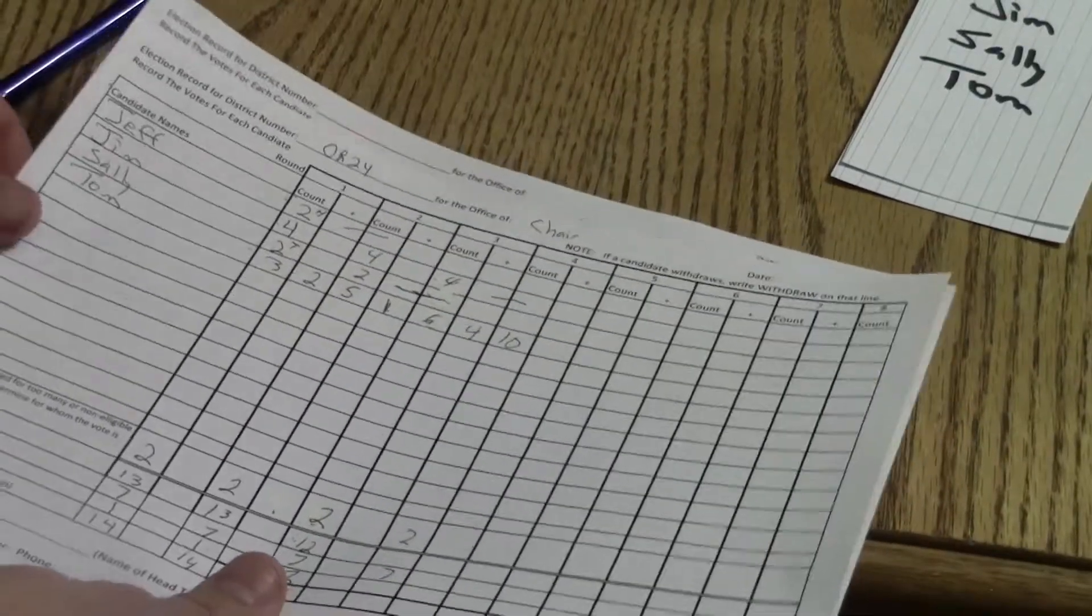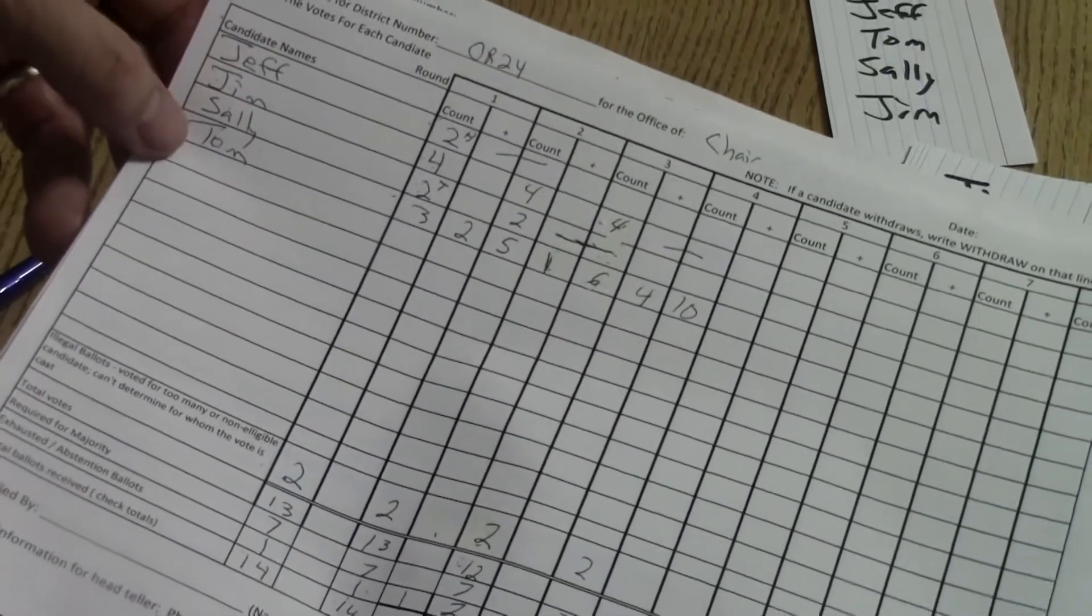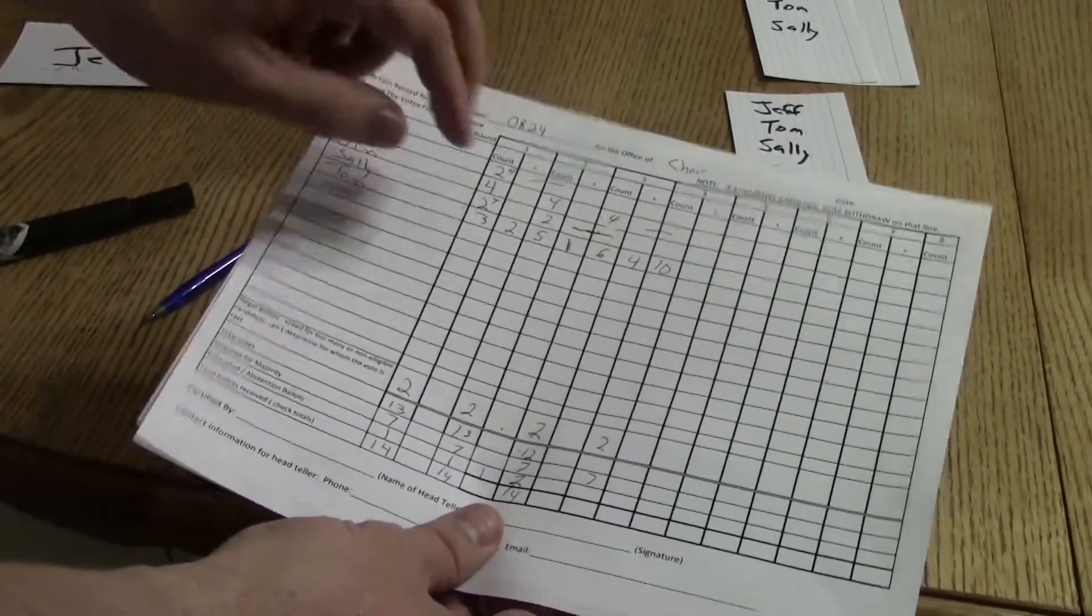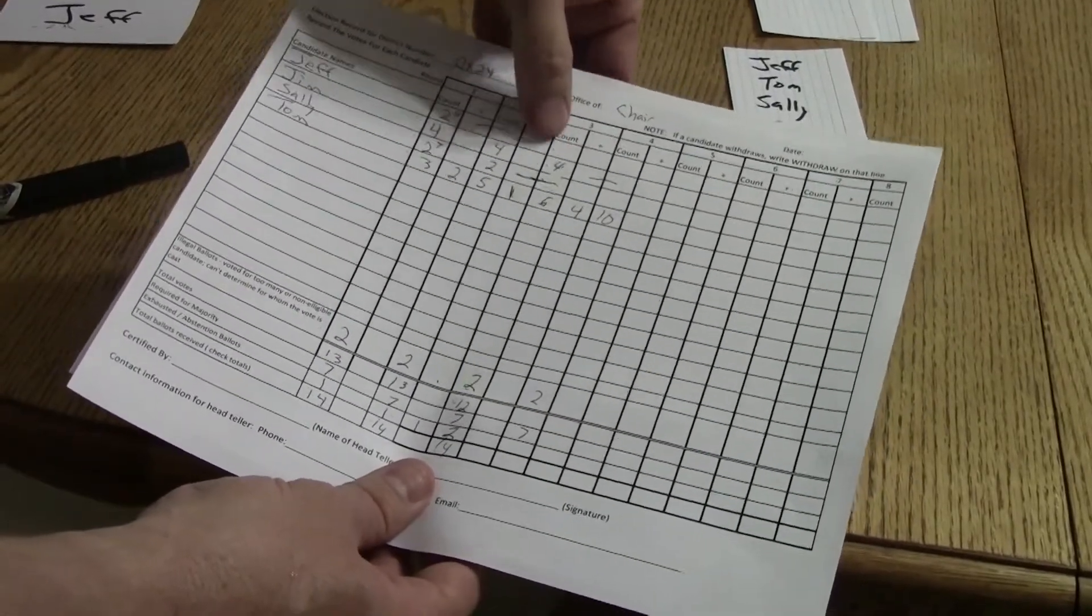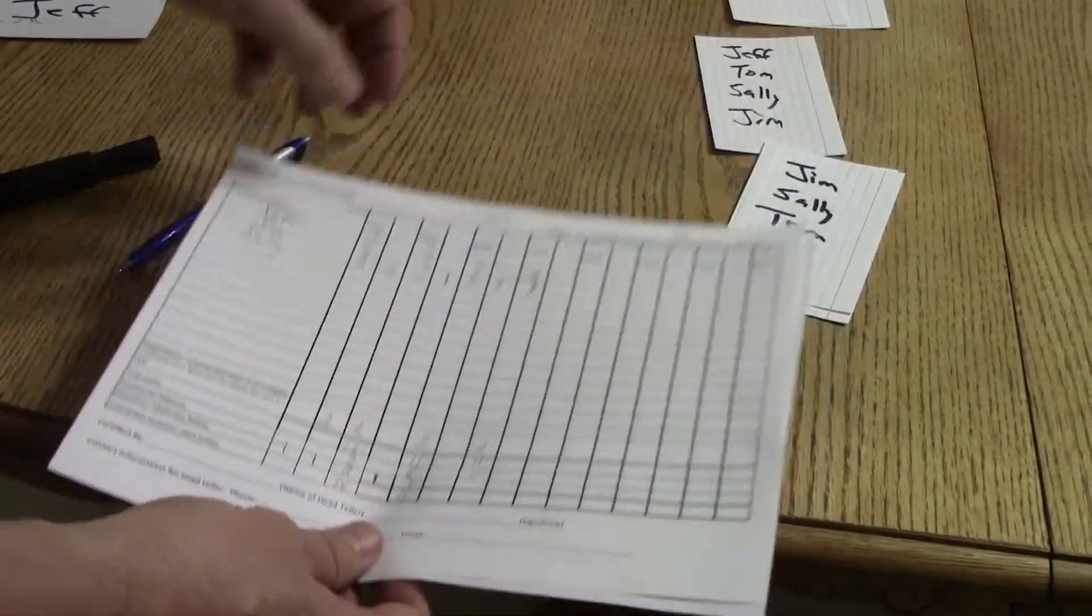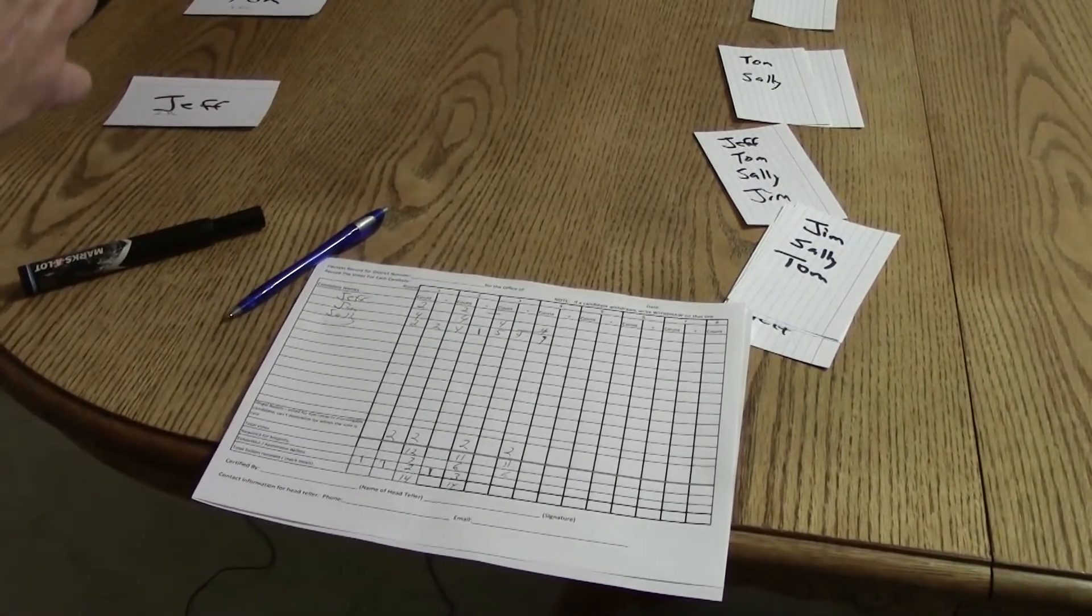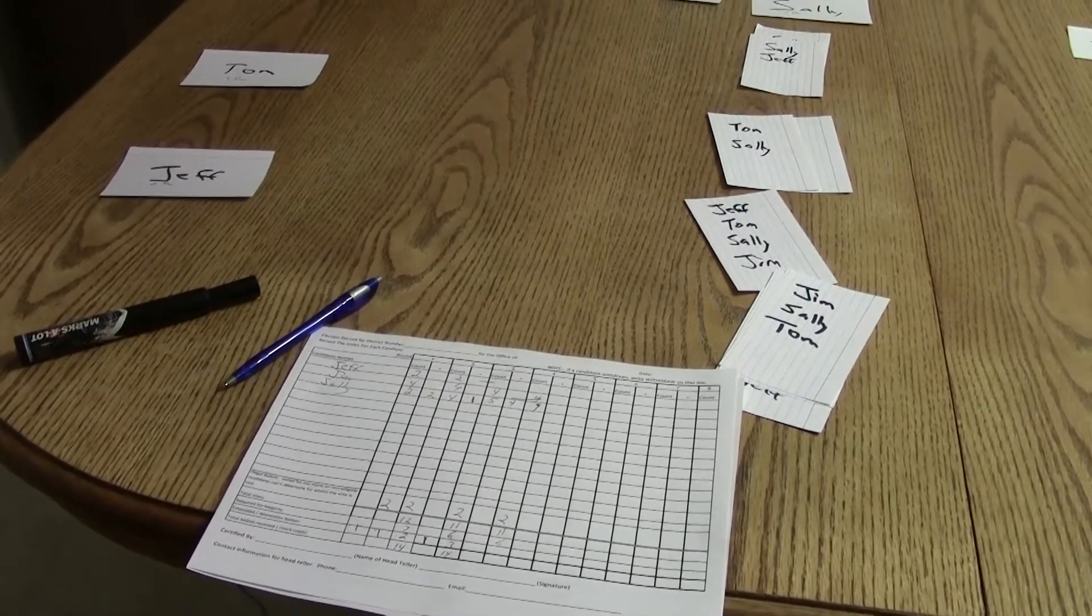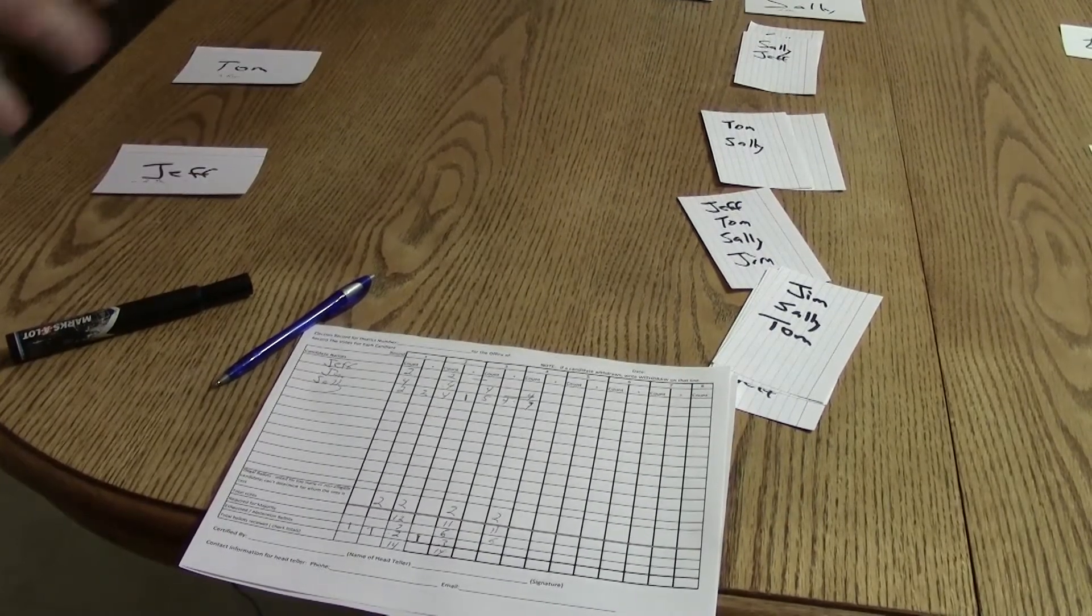Now if we look at our other vote before, remember we only had Jim and Tom as the last two. So this is why we just don't take the top two vote-getters and say that they're elected, because Tom would have been elected, but Jim would have been elected when he wasn't the most popular choice. And the reason that Sally eventually won is because she was the second choice of a lot of people, especially those who voted for Jeff. They wanted Sally to be their next choice instead of Jim.